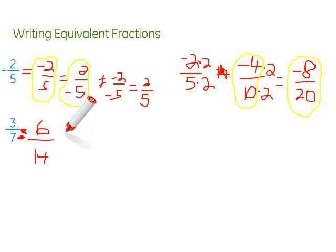We can get another equivalent fraction, multiply it by 2 again. Or, we could go back to the original one, multiply it by 3. So, 3 times 3 gives us 9, and 7 times 3 gives us 21. There we have 3 equivalent fractions.